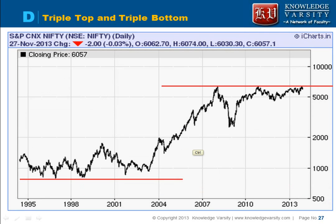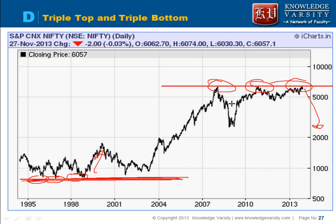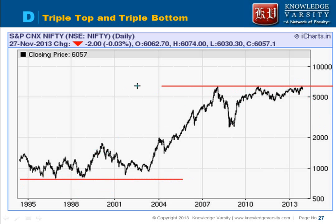Then you have a triple top and triple bottom. As the name signifies, the stock will hit the resistance line three times — this is a triple top — and then the stock price has to decrease. A triple bottom means the stock price has to increase. The triple bottom can be thought of as a very strong support line, and the triple top as a very strong resistance line. The stock price finds it difficult to break this line — you saw this in Nifty in 2008, 2010, and recently in 2013.